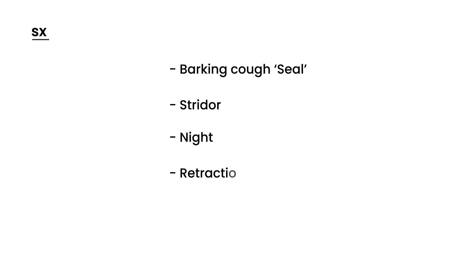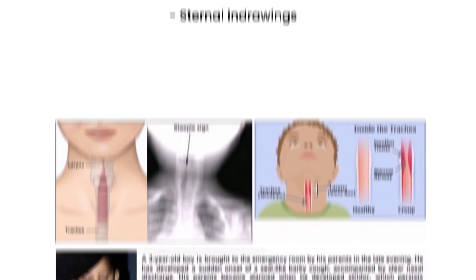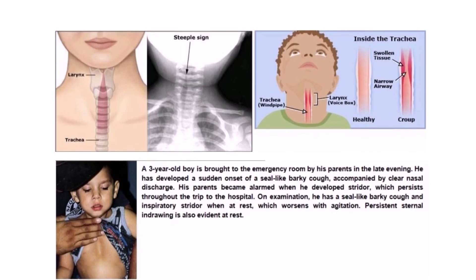Another important sign is that a child can often show retractions, where the sternal area starts to draw inward — these sternal in-drawings. I'll show you a picture of a child with those sternal in-drawings. If you can see the middle part, notice how it kind of caves in — that's what we mean by retractions.